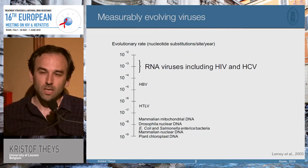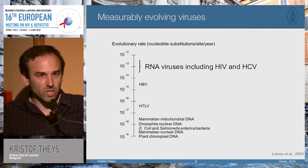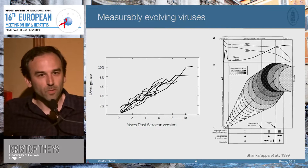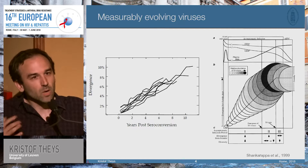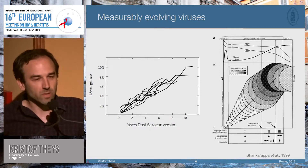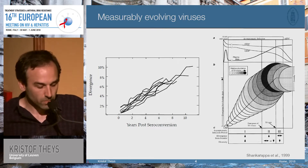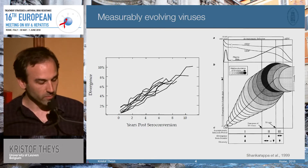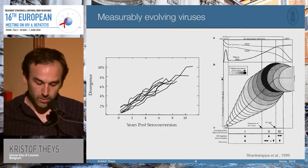HIV is one of the fastest evolving organisms, so it is very easy for the virus to generate diversity. This was shown by the famous paper of Shankarappa in 1999, which nicely illustrates how during the course of infection of an HIV patient, there is a lot of generation of HIV diversity, both in terms of diversity and divergence. Over the time course of infection, you see a rapid increase moving away from the founder virus.